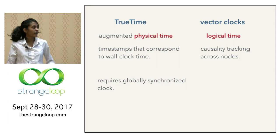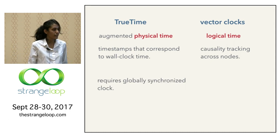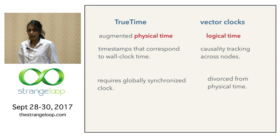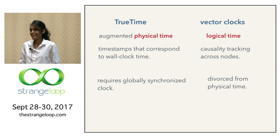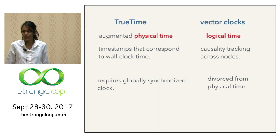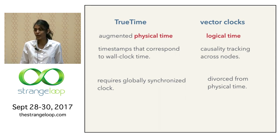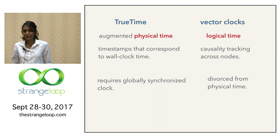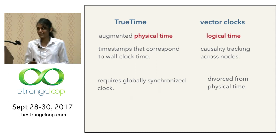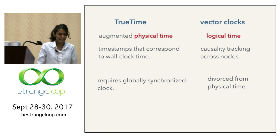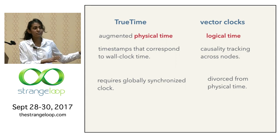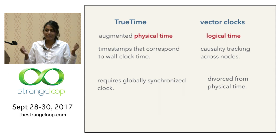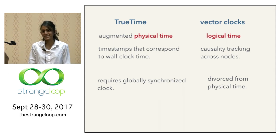To wrap up: we started with a discussion of why physical time doesn't quite cut it for distributed systems. We then looked at two very different approaches: TrueTime, which augments physical time with uncertainty information to give us externally consistent timestamps; and vector clocks, which do away with physical time entirely, tracking logical time to identify causal and conflicting updates. These approaches aren't perfect — TrueTime requires a globally synchronized clock, and vector clocks have no connection to physical time. This brings us to an idea I'll leave you with: hybrid logical clocks used by CockroachDB, which bridges the gap between physical and logical time. I hope you leave with an appreciation for the nuances of timekeeping in distributed systems. Thank you.